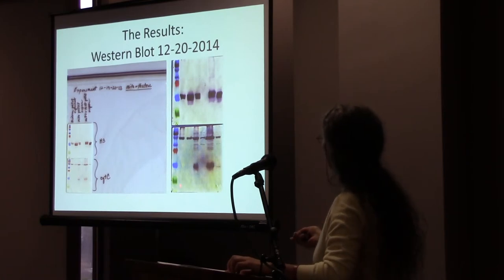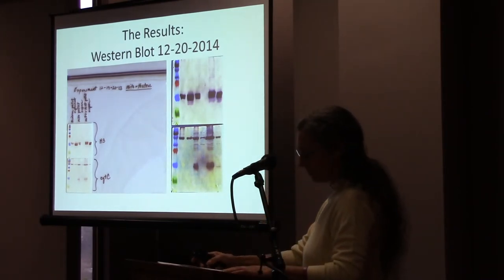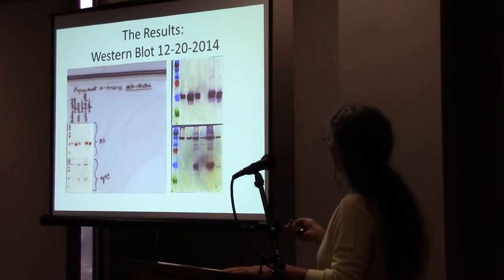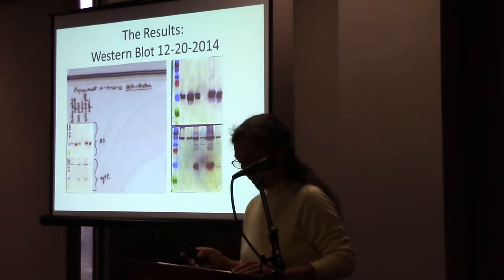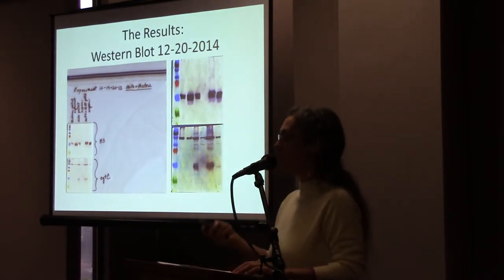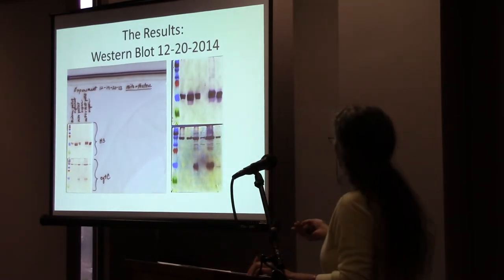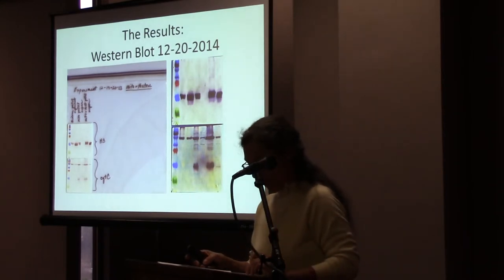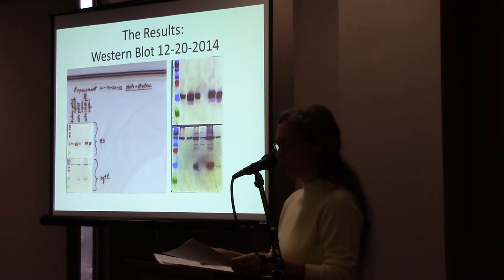Lanes 2 and 3 — the pellet and the supernatant. In the top blot, histones are present in both the pellet and the supernatant. You can see there is much more histones in the supernatant than the pellet; this is simply because it's not possible to remove every drop of supernatant from the pellet. In the bottom blot, there is no evidence of cytochrome C in either the pellet or the supernatant, meaning the histone fraction is analytically free of mitochondria or mitochondria-specific proteins like cytochrome C.